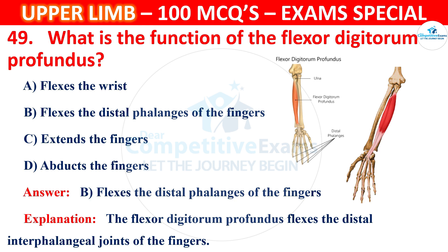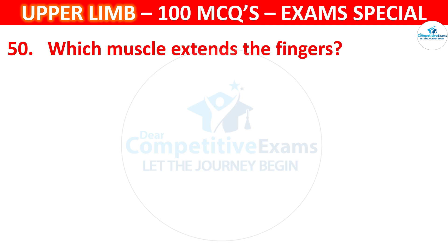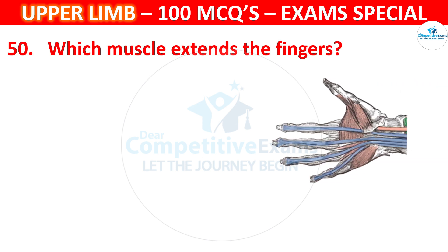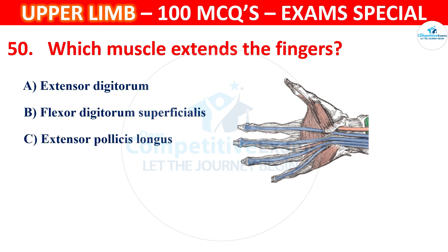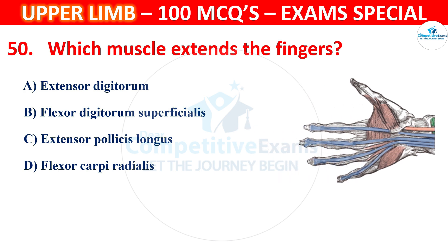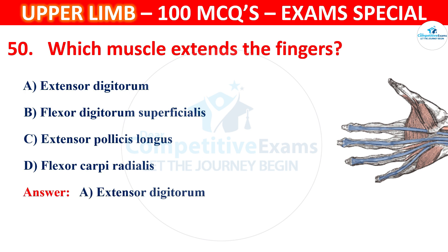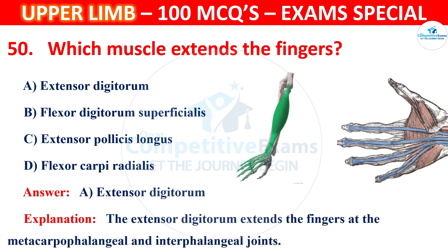Question number 50: Which muscle extends the fingers? Options: extensor digitorum, flexor digitorum superficialis, pollicis longus, or flexor carpi radialis. The correct answer is A, extensor digitorum. The extensor digitorum extends the fingers at the metacarpophalangeal and interphalangeal joints.